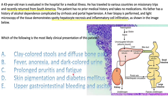Prolonged pruritus and fatigue would be seen in chronic cholestatic diseases like primary biliary cholangitis or primary sclerosing cholangitis. Bile salts escape into the blood because of obstruction and cause itching (pruritus) and fatigue. Both of these apply to chronic cholestatic diseases on a different timeline — this is early and that is late — and has nothing to do with acute hepatitis A.